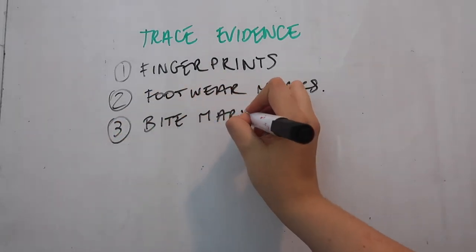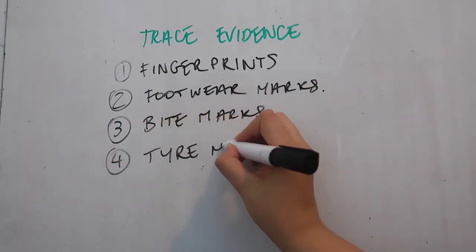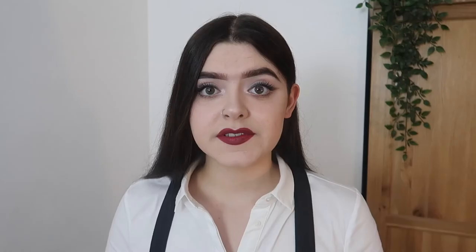The third example of trace evidence is bite marks. A forensic odontologist — very clever people — can actually match bite marks found on a person's skin to somebody's teeth. The last example of trace evidence is tyre marks. Tyre marks are similar to footwear marks in the fact that if they're three-dimensional they can be cast, but also when photographed, specific markings can be matched to different products.